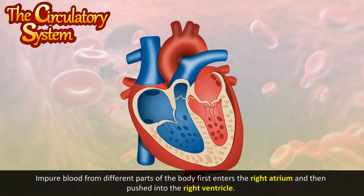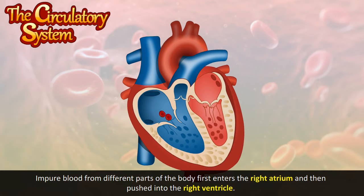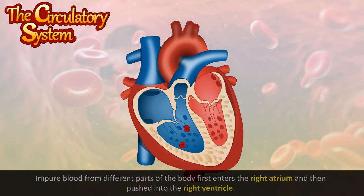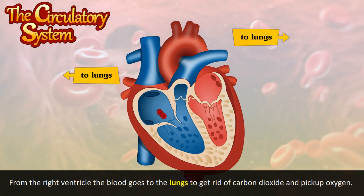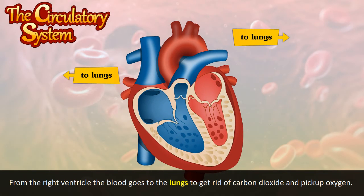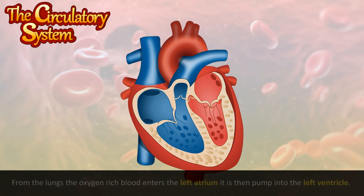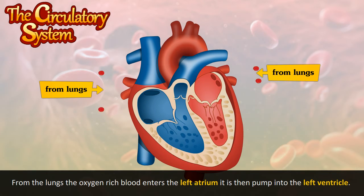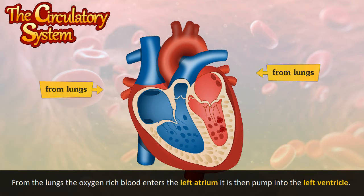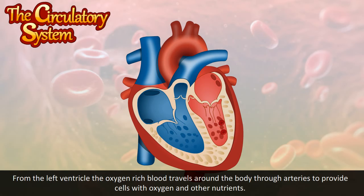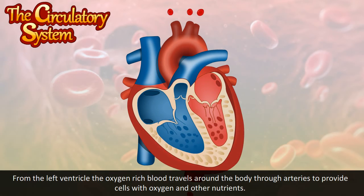Impure blood from different parts of the body first enters the right atrium and then is pushed into the right ventricle. From the right ventricle, the blood goes to the lungs to get rid of carbon dioxide and pick up oxygen. From the lungs, the oxygen-rich blood enters the left atrium and then is pumped into the left ventricle. From the left ventricle, the oxygen-rich blood travels around the body through arteries to provide cells with oxygen and other nutrients.